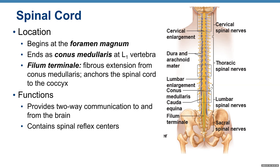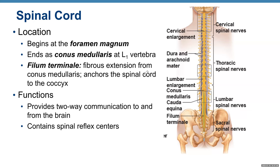After the conus medullaris, you have what's shown here in green — this is the filum terminale, a fibrous extension. So it's not nervous tissue; it's connective tissue. It's a fibrous extension from the conus medullaris that anchors the spinal cord to the coccyx. The spinal cord provides two-way communication to and from the brain, and contains spinal reflex centers.